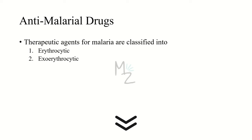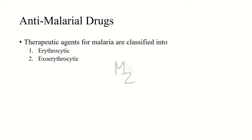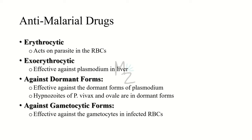Therapeutic agents for malaria are classified based on the location of the parasite in the human body. Erythrocytic drugs act against the form of the parasite affecting red blood cells, while exoerythrocytic drugs work against the form of the parasite outside the red blood cells — in the blood or in the liver. Exoerythrocytic drugs are effective against Plasmodium in the liver.